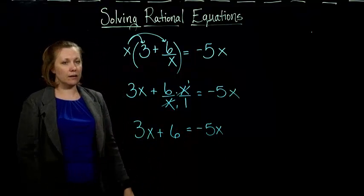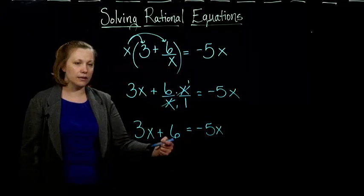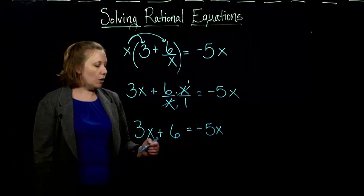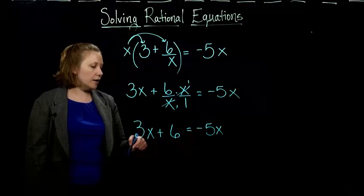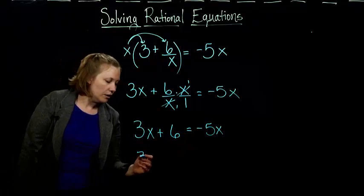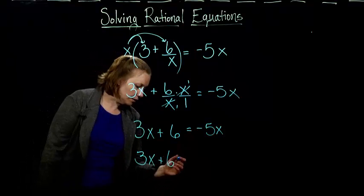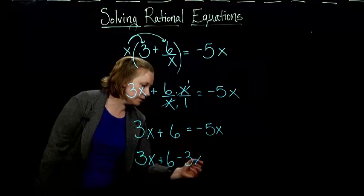And so now I'm just back to the same kinds of equations we were solving before. I just have to get the x's on one side and the numbers on the other. So I'm going to subtract 3x from both sides. You could add 5x to both sides. It doesn't matter. You'll get the same answer either way. And so subtract 3x from both sides.